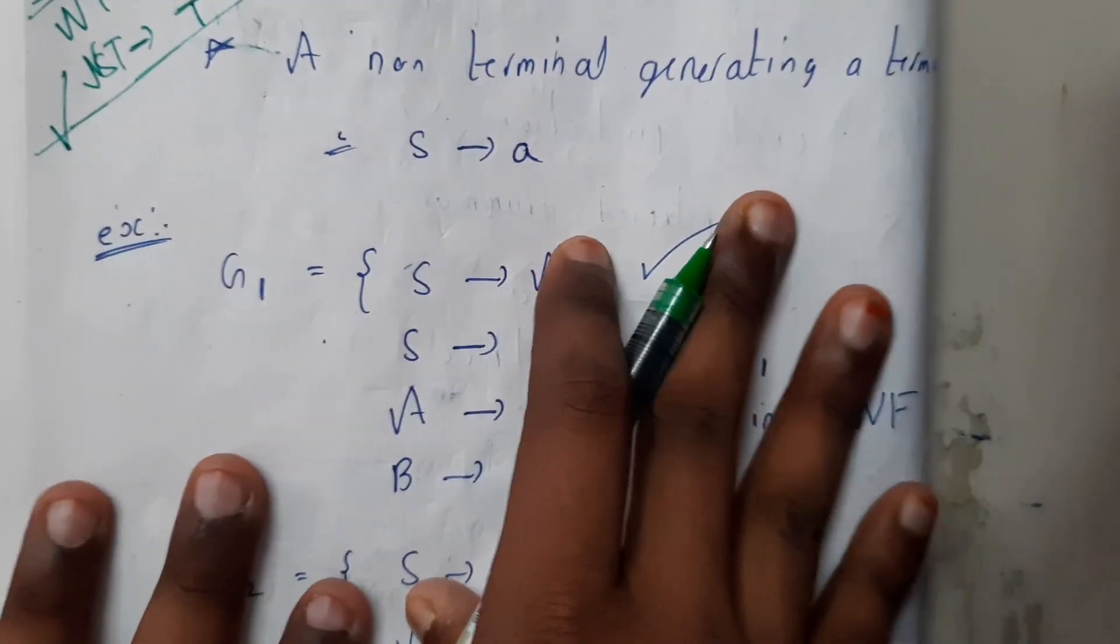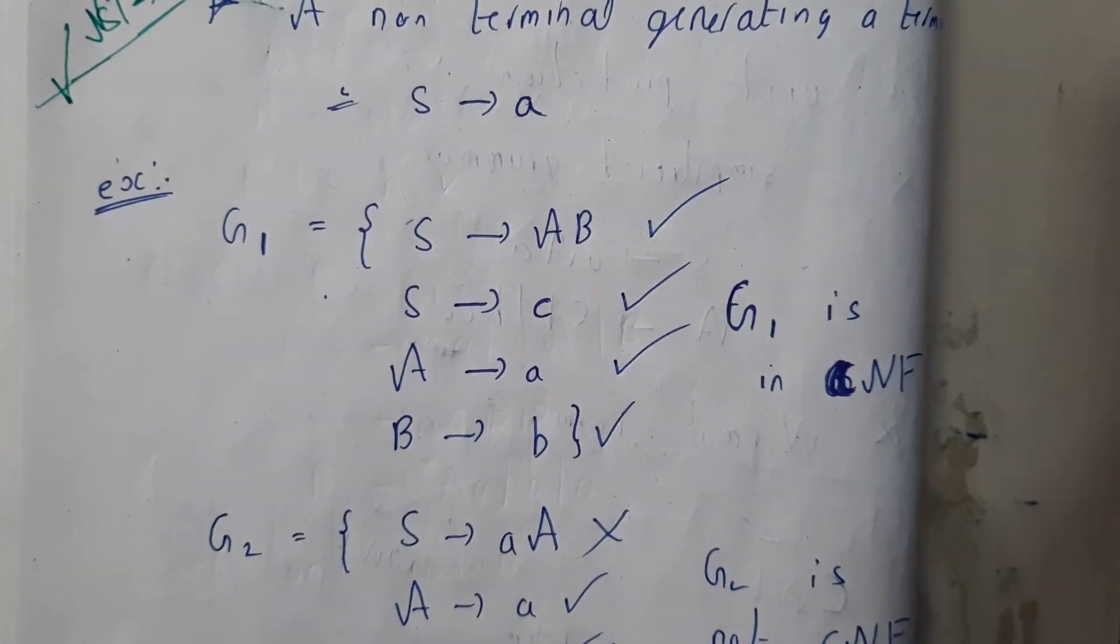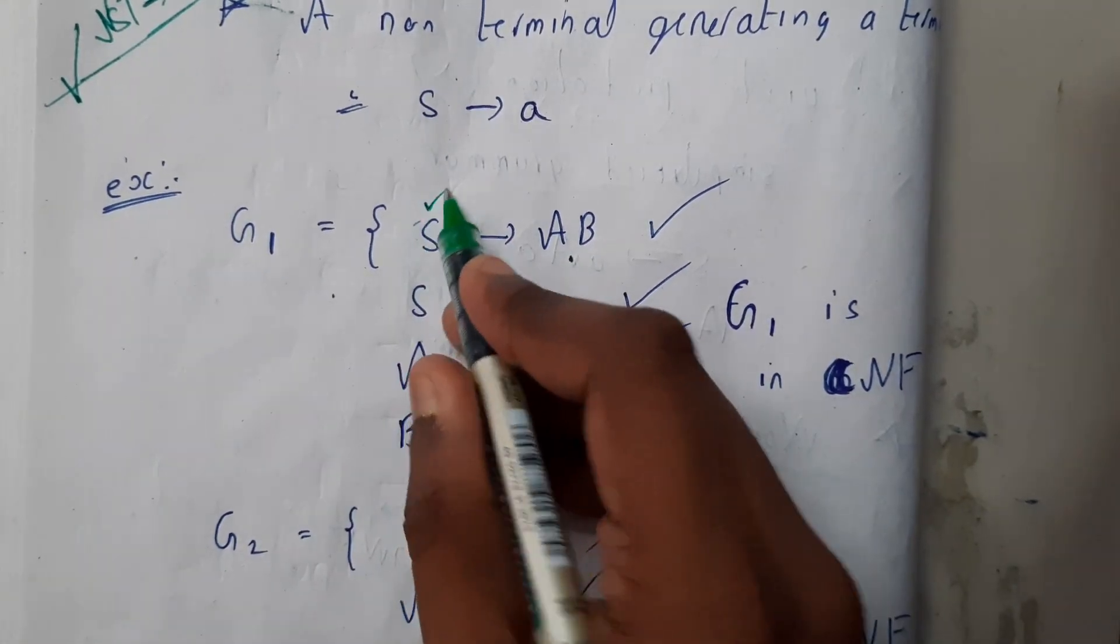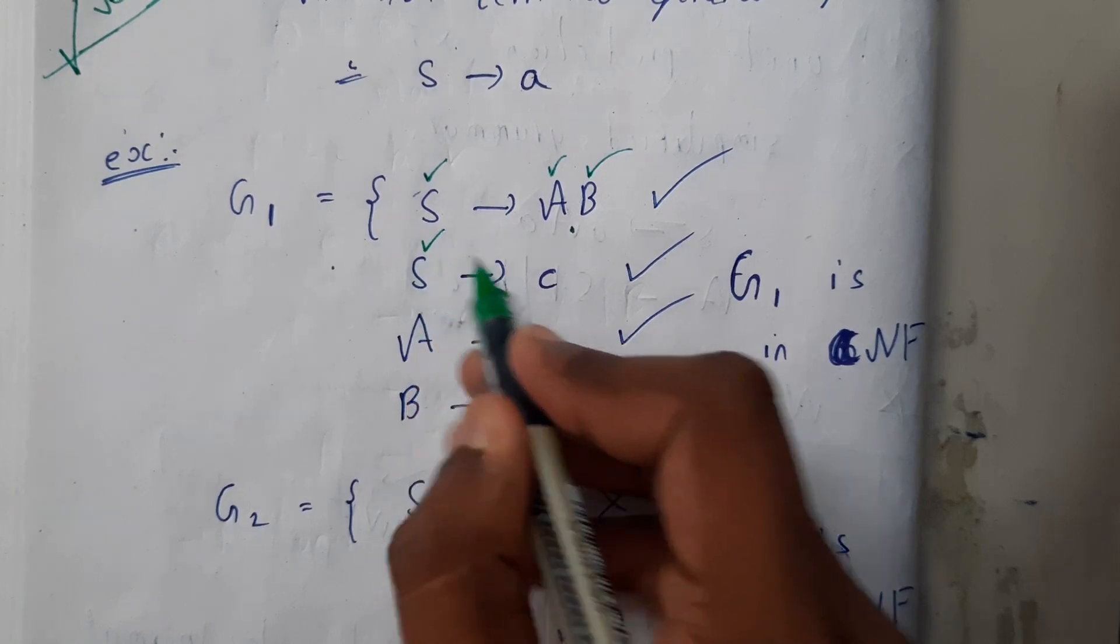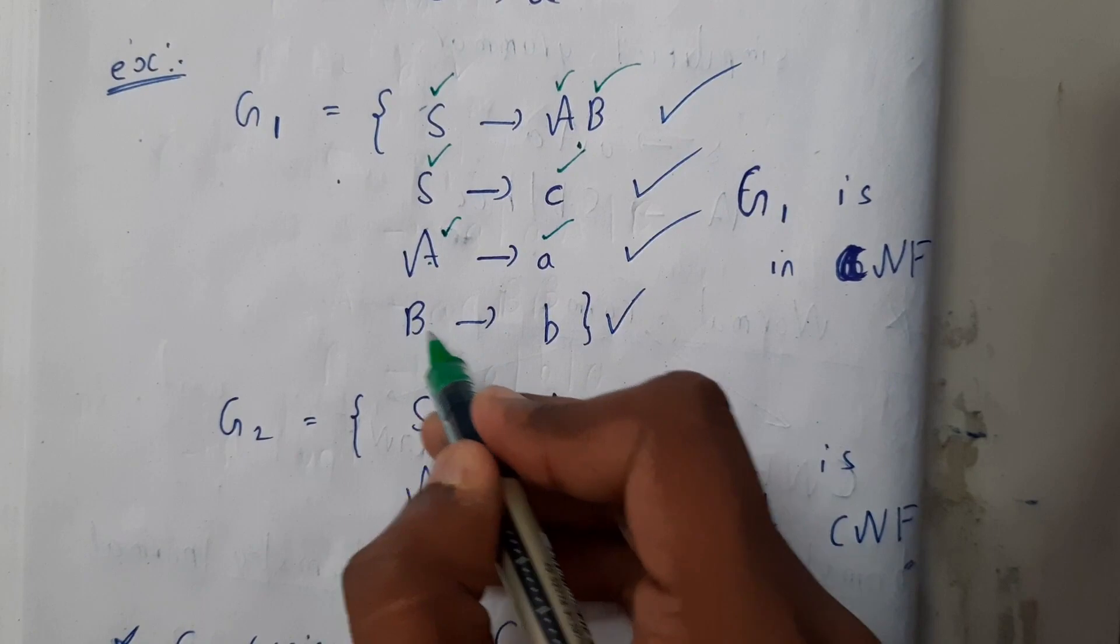So let us assume a particular grammar. S tends to AB, it is non-terminal with non-terminal. S tends to C, non-terminal with terminal. A tends to small a, non-terminal with terminal. A tends to B, non-terminal with terminal.